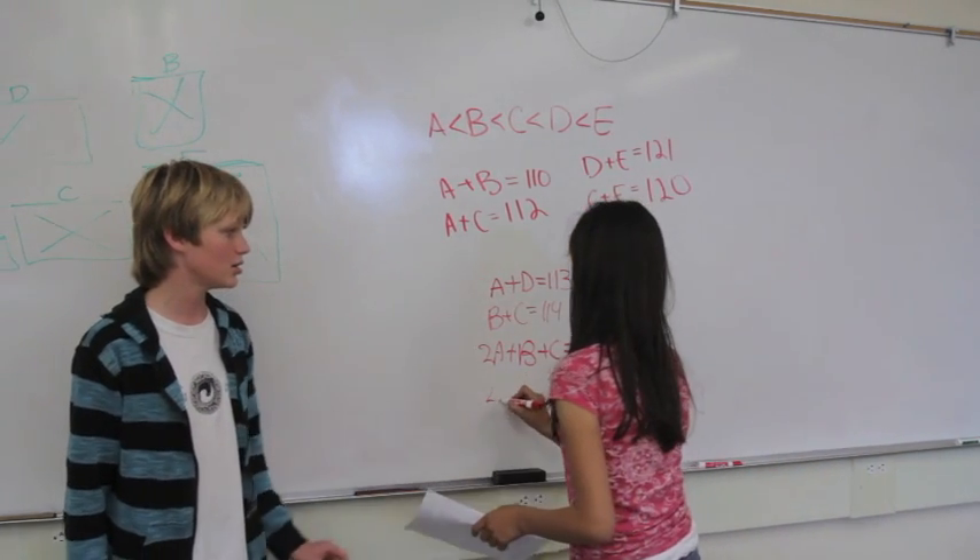Now we're going to add these two equations together. So we're going to have 2A plus B plus C equals 222. Since we know that B plus C is 114, we can say 2A plus 114 is 222.